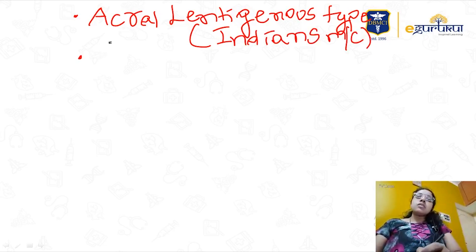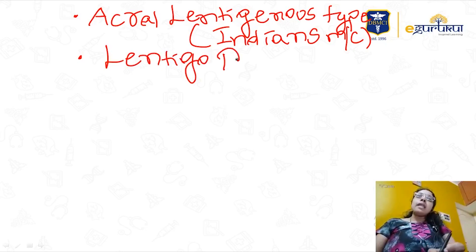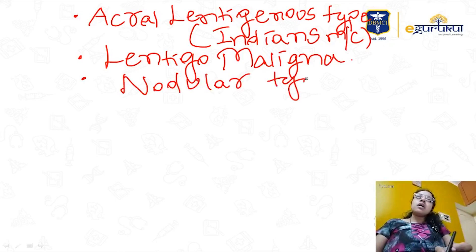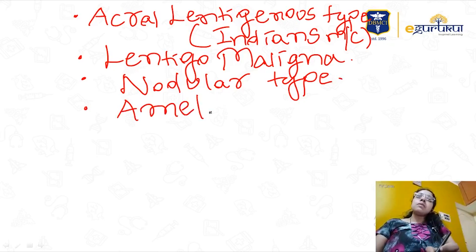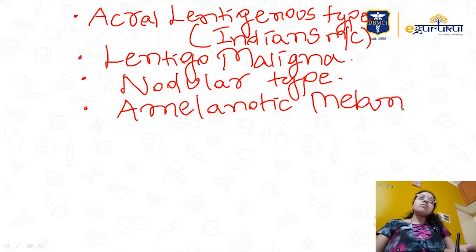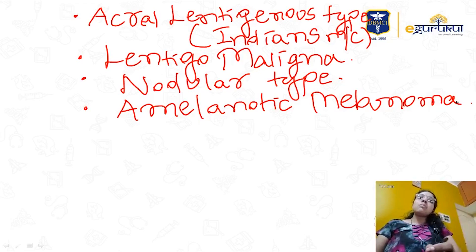The third type is lentigo maligna melanoma. The fourth is nodular melanoma. The fifth is amelanotic melanoma, where pigmentation is absent — it can resemble basal cell carcinoma. Also, acral lentiginous type is most commonly seen in extremities, and superficial spreading type is the most common overall type.